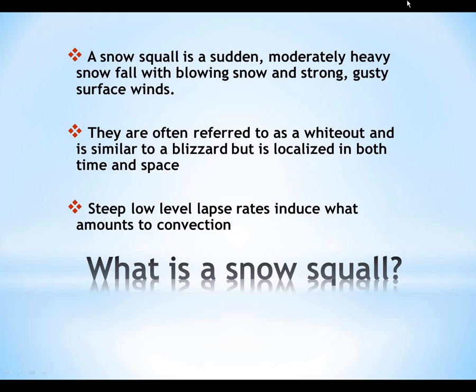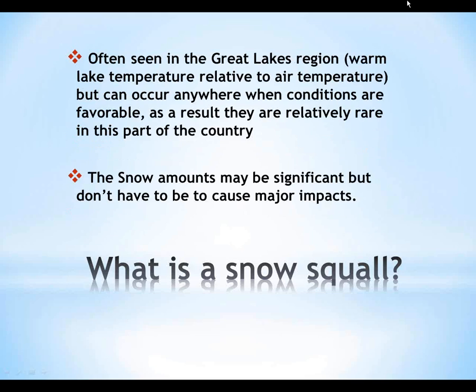A snow squall is a short, moderately heavy snowfall with blowing snow and strong gusty winds at the surface. They're often referred to as a whiteout and are similar to a blizzard, but localized in both time and space — that's really the epitome of what we were dealing with. Steep low-level lapse rates basically induce what amounts to convection. They're often seen in the Great Lakes region. Snow amounts may be significant, but they don't have to be to cause major impacts, and that's definitely the case in this event.